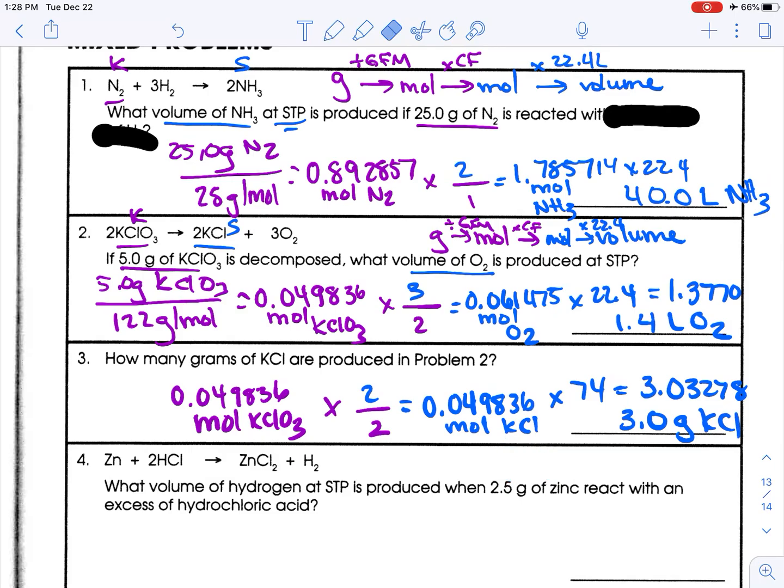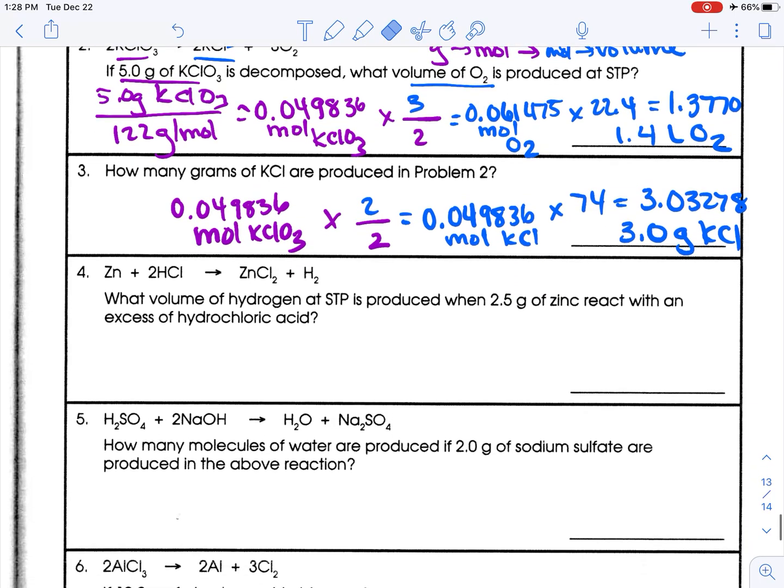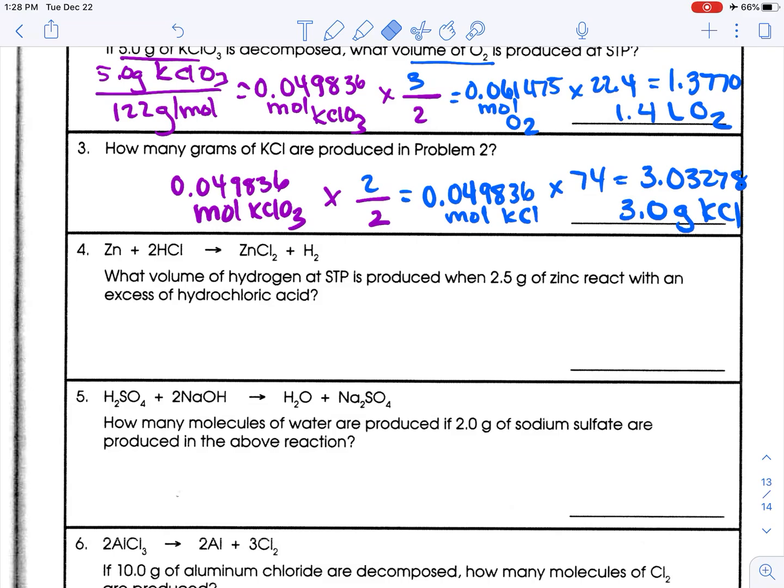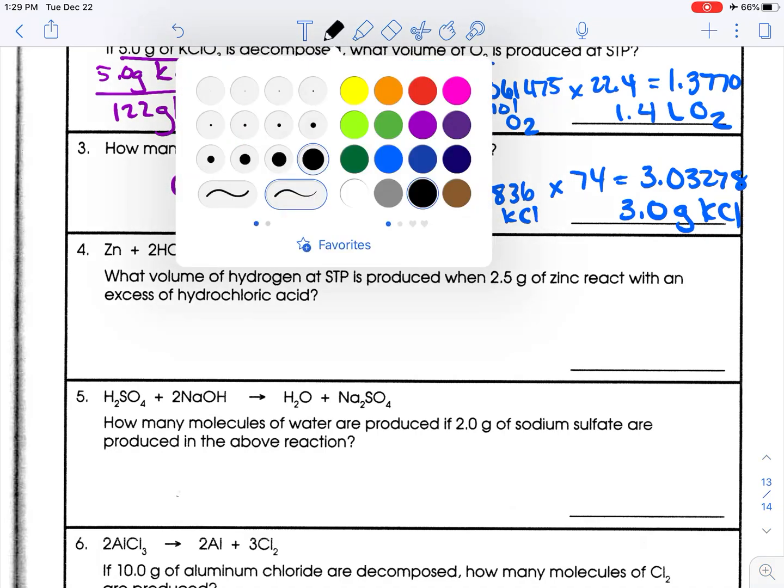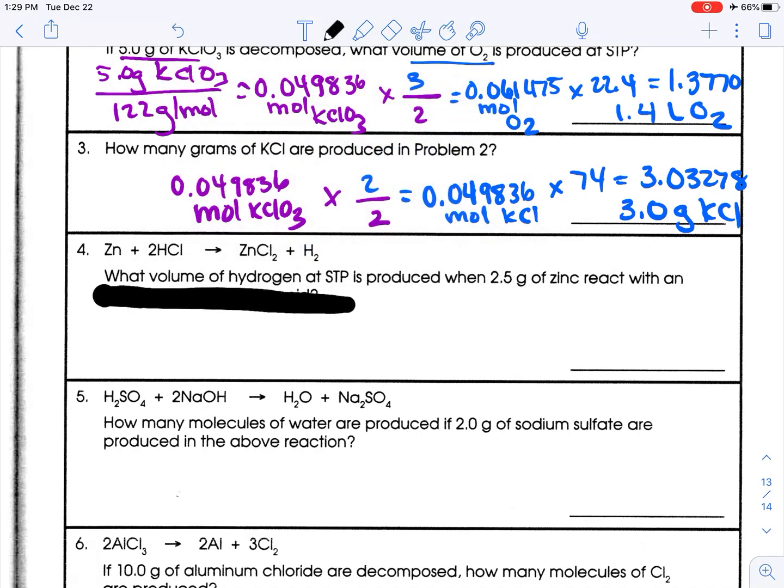By the way, if any of this is confusing, please reach out to me, or if you're watching and you have a different teacher, ask your teacher. What volume of hydrogen at STP is produced when 2.5 grams of zinc react with an excess of hydrochloric acid?